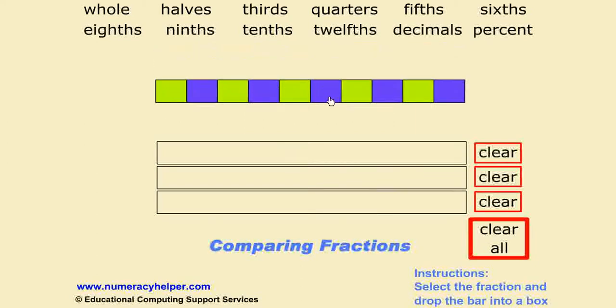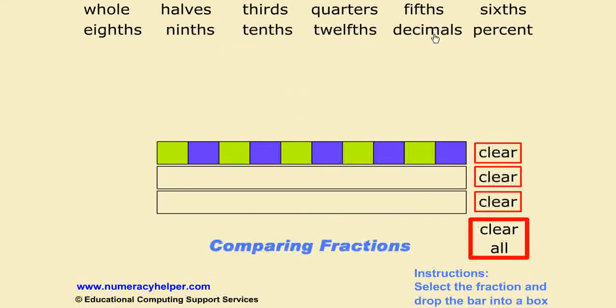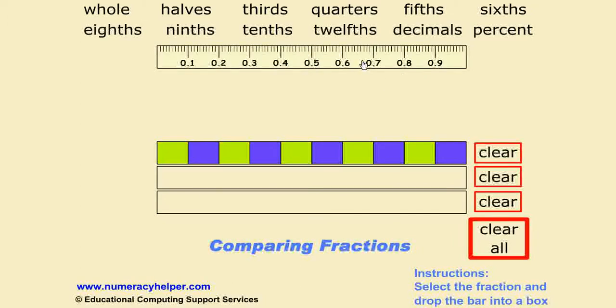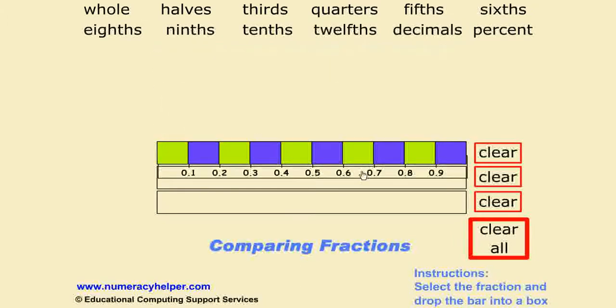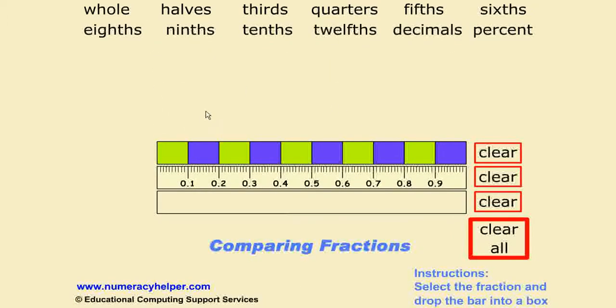Here's our tenths bar which we'll drag down. We can then click on our decimals ruler, drag it down below there and compare one tenth with 0.1 or half compared to 0.5.